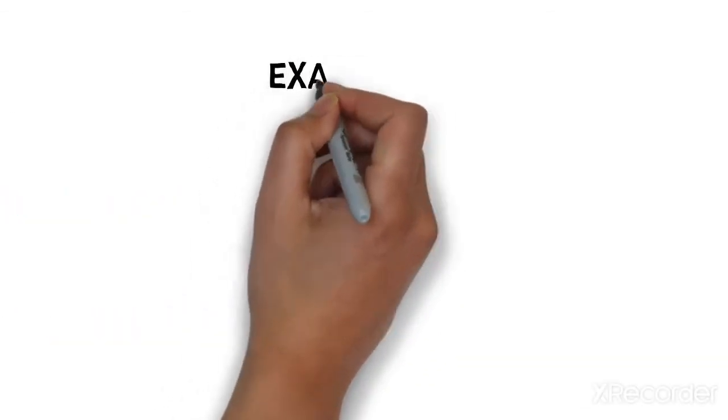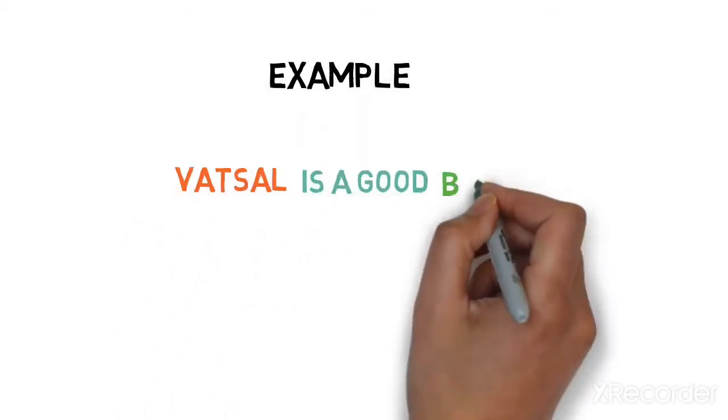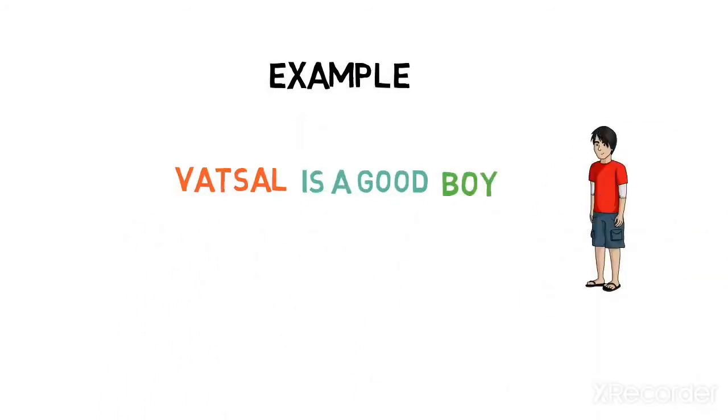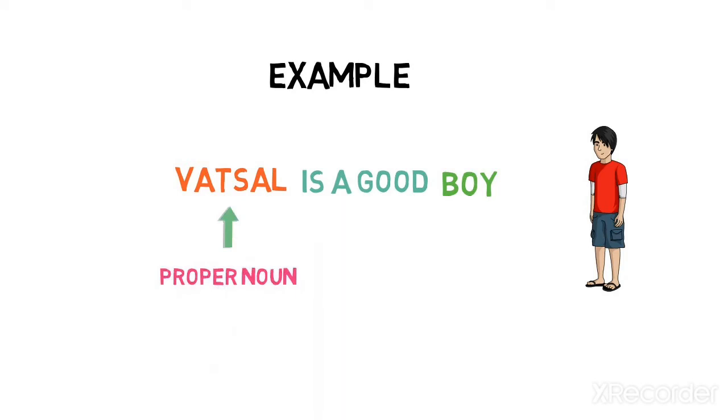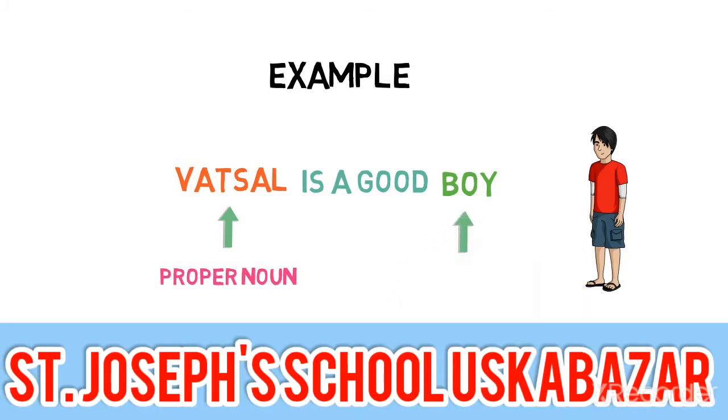Let's see an example to make things clear. Vatsal is a good boy. Here, Vatsal is a name of particular boy, so it is a proper noun. While boy is a name we give in general to anyone, so it is a common noun.